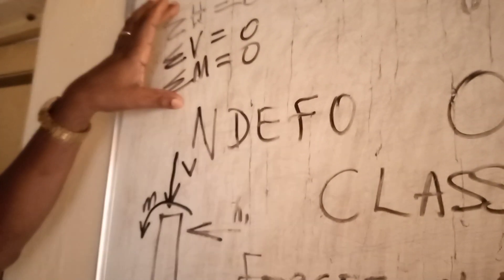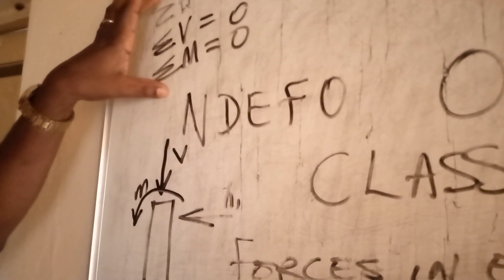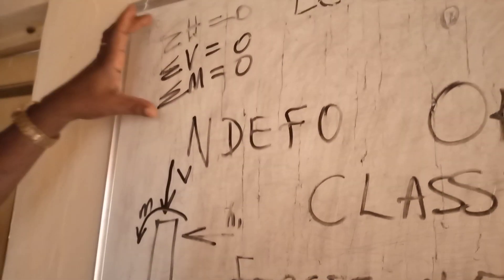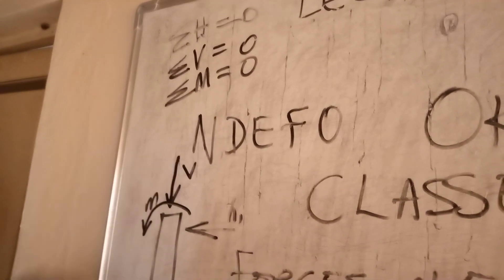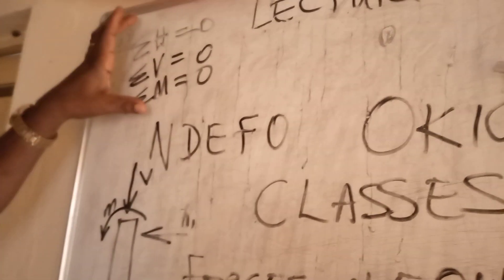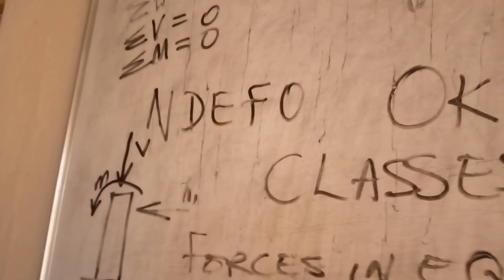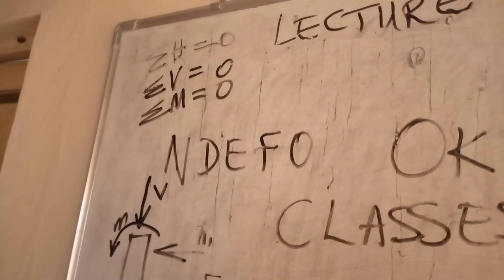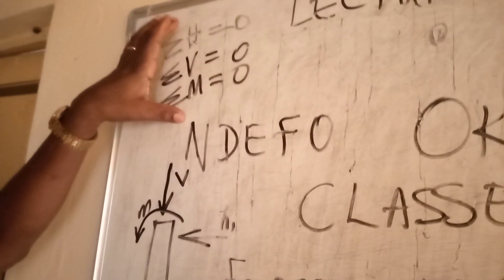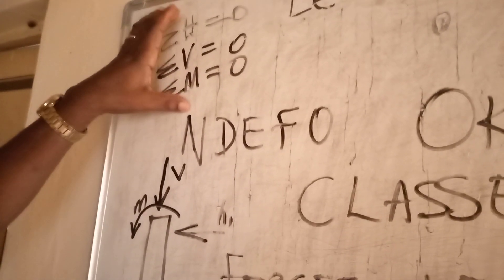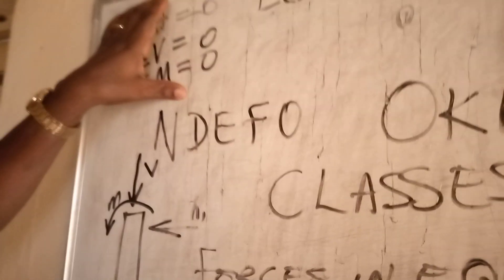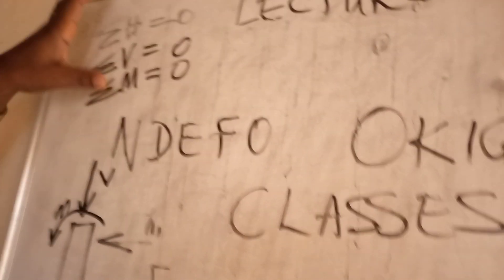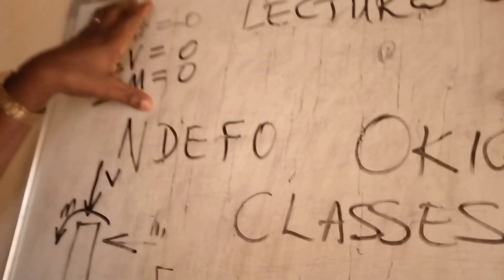There are three equations of equilibrium. For them to solve a problem in engineering, that problem must have at most three unknown factors. If the unknowns are more than three, these equations cannot solve it. Structures that can be solved by these three equations of statics are called determinate structures. The ones these equations cannot solve are called indeterminate structures.